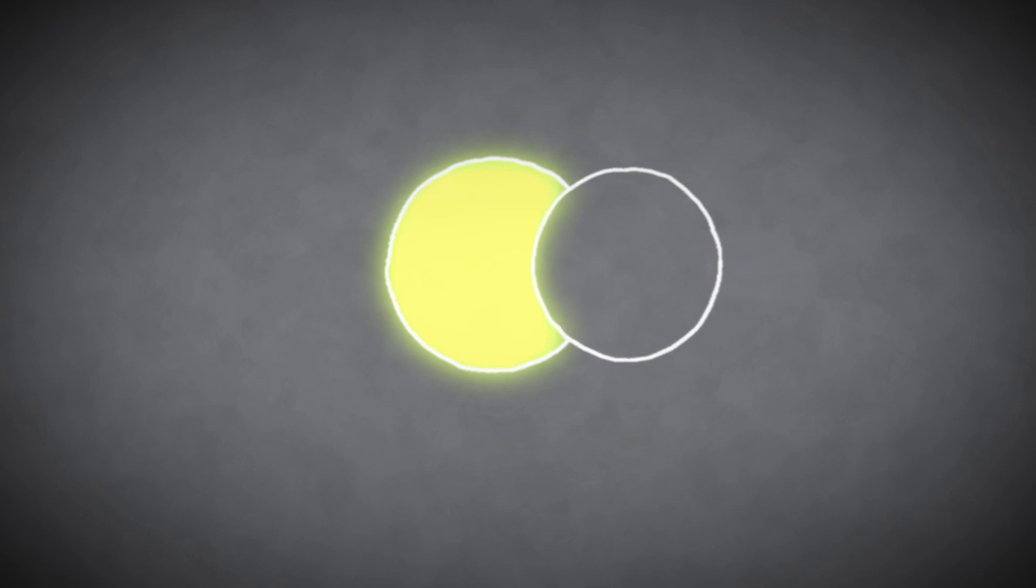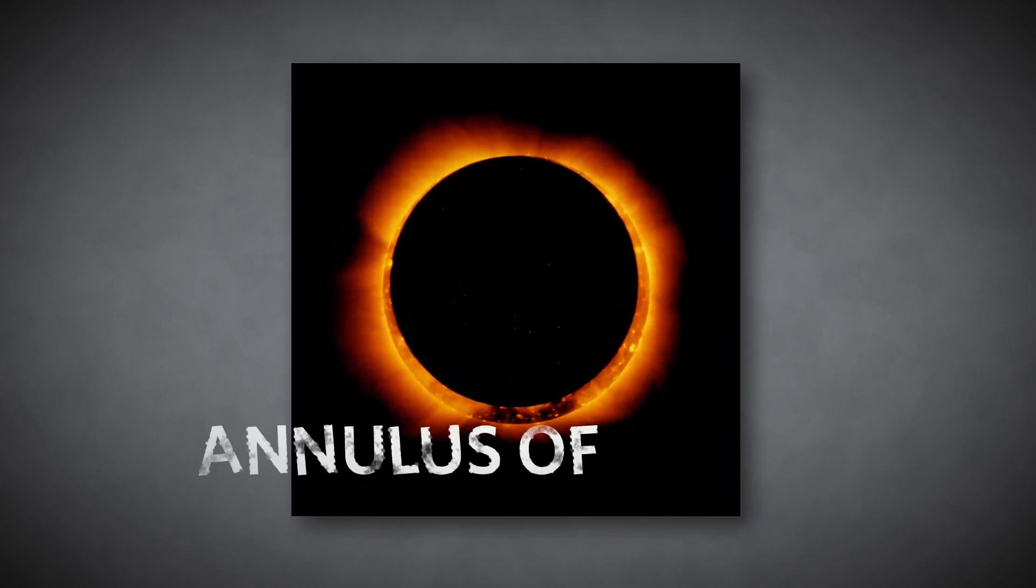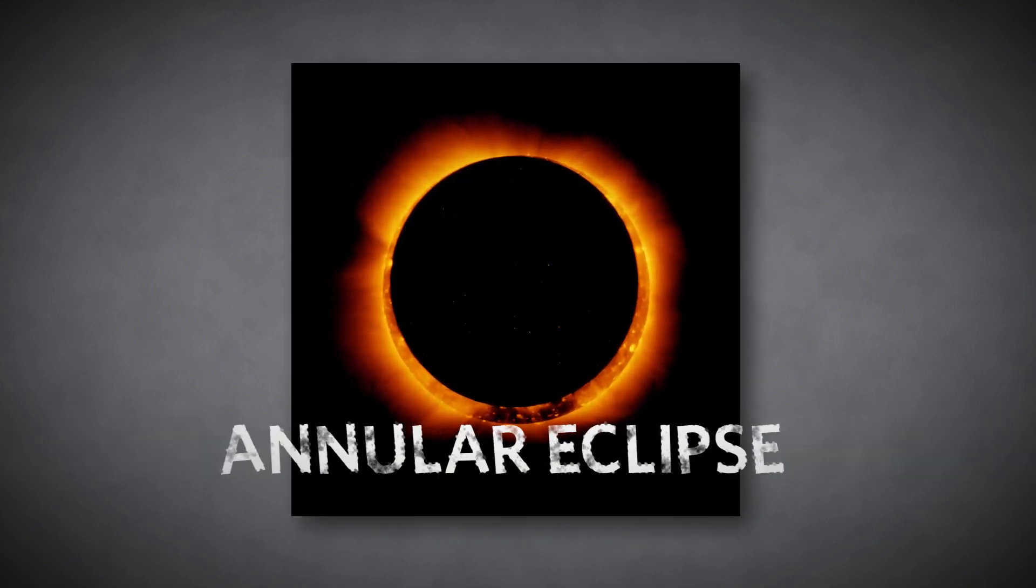It might not completely block the sun's disk, leaving a thin ring of light visible around the moon's silhouette. This bright annulus of light washes the sun's corona from view.